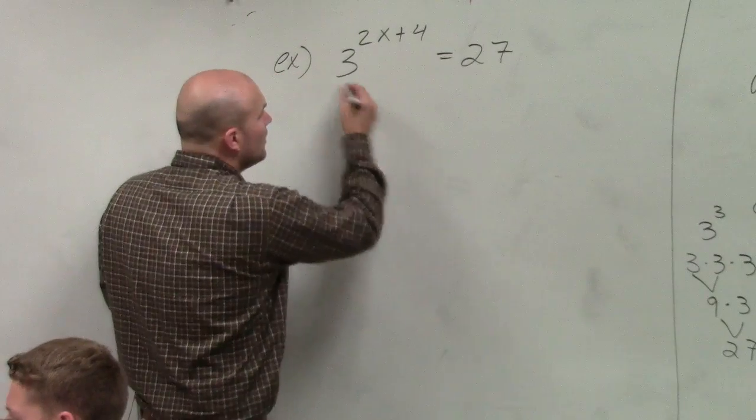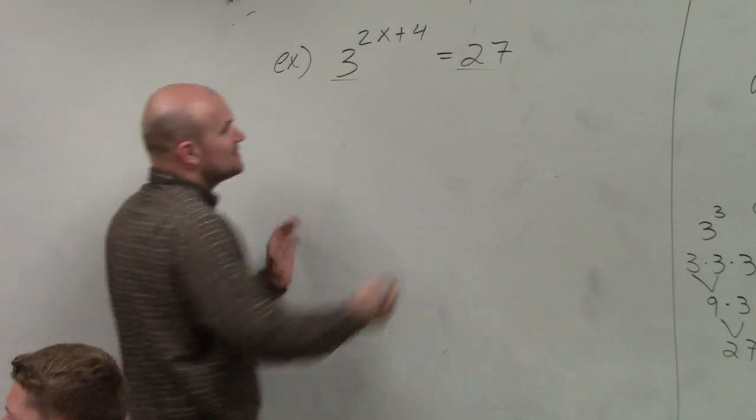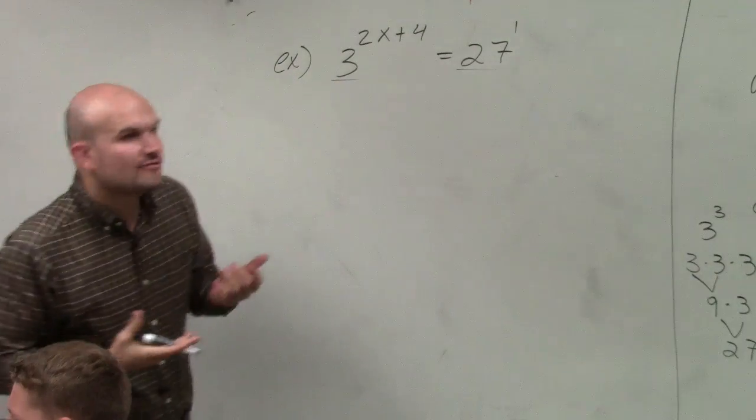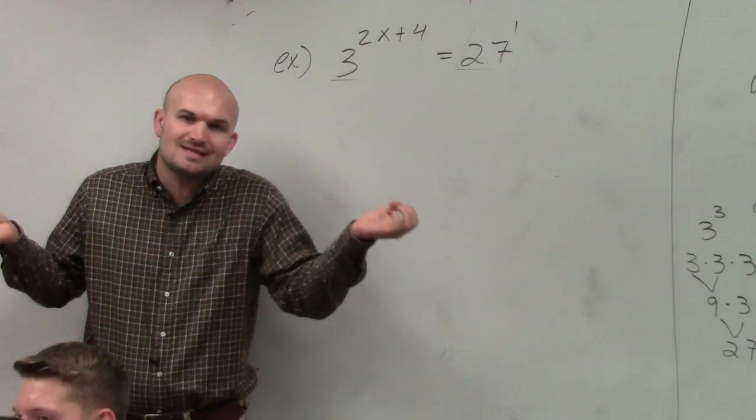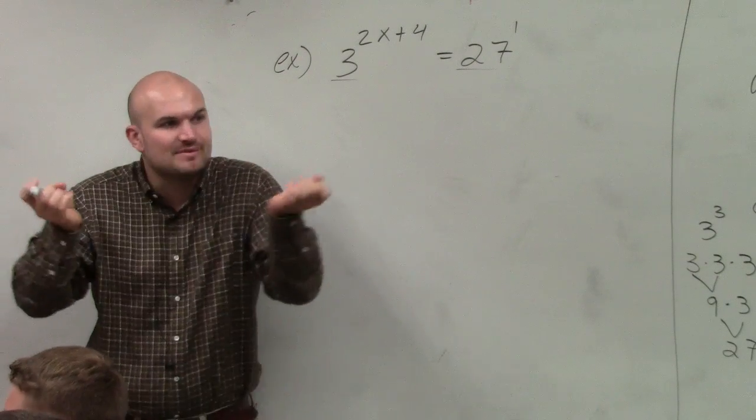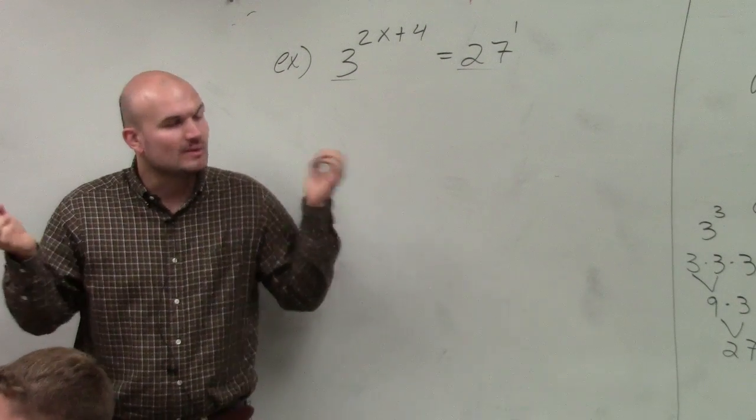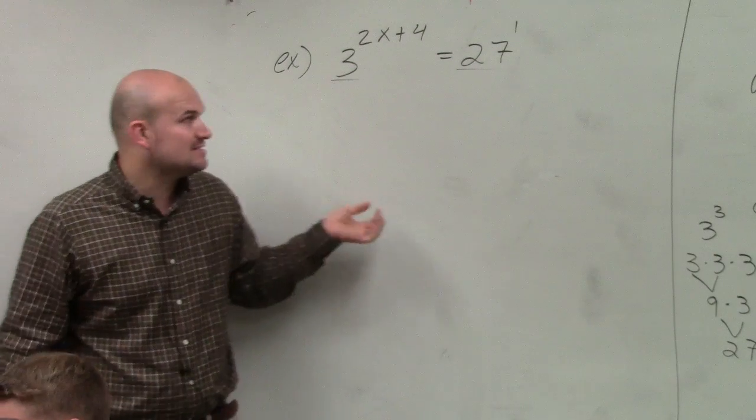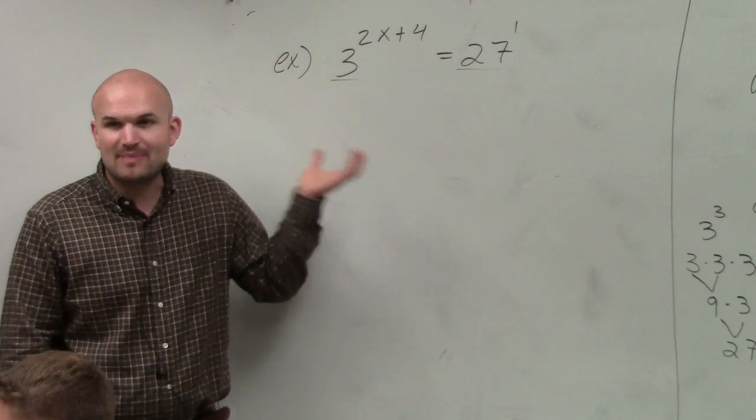Right now you have a 3 and a 27. Basically that's 27 raised to the first power, so your two bases are 27 and 3. The only way to solve using the one-to-one property is they have to be exactly the same. So without changing the bases, can we rewrite them with the same base?